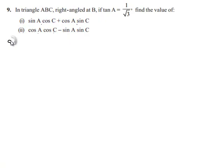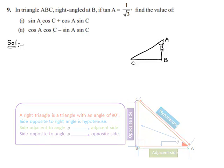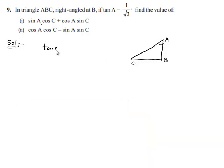Moving on to the solution. We are given a triangle ABC which is right-angled at B, and the relation tan A is equal to 1 by root 3. In the first part, we need to find the value of sin A cos C plus cos A sin C, and in the second part, cos A cos C minus sin A sin C. To find the solution, we need to find the values of sin A, cos A, sin C, and cos C.